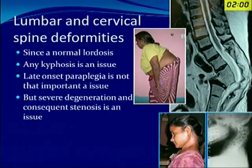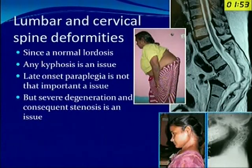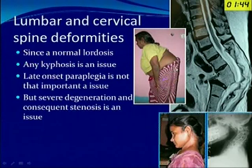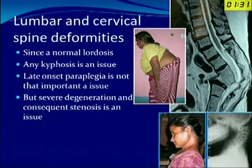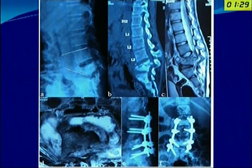For lumbar and cervical spine deformity, since there is a normal lordosis, any kyphosis is an issue. Late-onset paraplegia may not be as big a problem for the lumbar spine, but severe lumbar canal stenosis from long-standing lumbar kyphosis causes severe degeneration. Therefore, for lumbar kyphosis or cervical kyphosis, we should have a lower threshold for correction at a lesser deformity and should correct them in the active stage of disease.